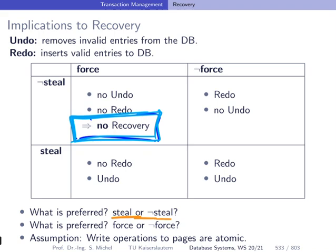Consider what 'no steal' means: a page used by a still-running transaction cannot be evicted from the buffer and written to disk. Since buffer capacity is limited, this limits parallelism — there cannot be too many transactions running at the same time, especially if they access many pages. What about force versus not force — which is better?